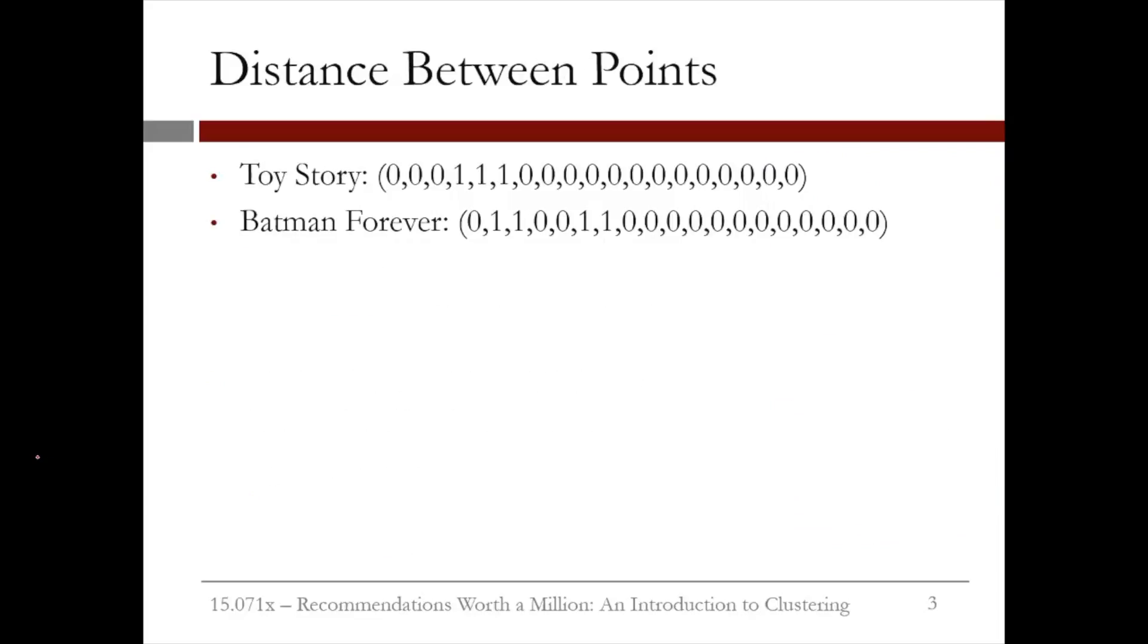So given these two data observations, let's compute the distance between them. The distance d would be equal to the square root of the difference in the first component, 0 minus 0 squared, plus the difference in the second component, 0 minus 1 squared, plus the difference in the third component, 0 minus 1 squared, plus the difference in the fourth component, 1 minus 0 squared, et cetera. This ends up being equal to the square root of 5.